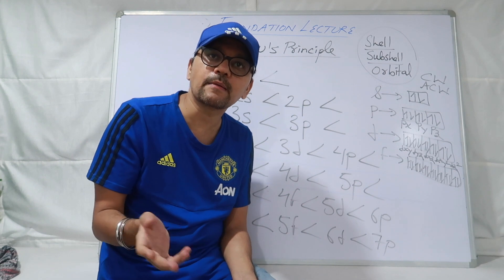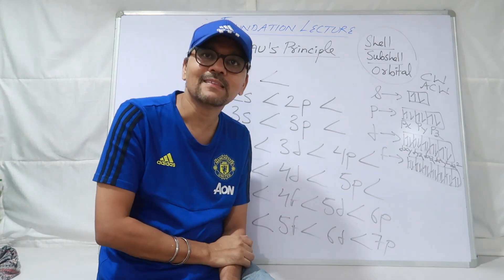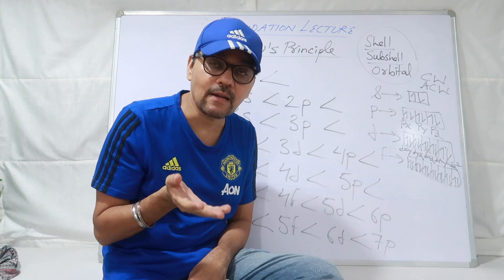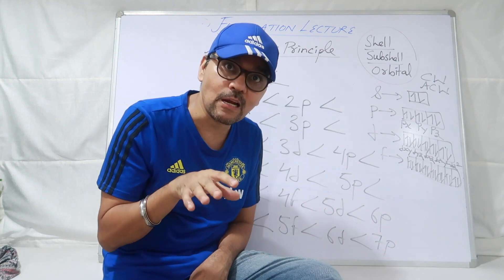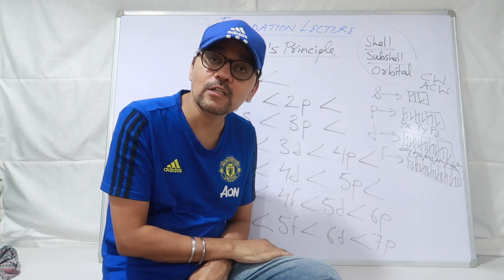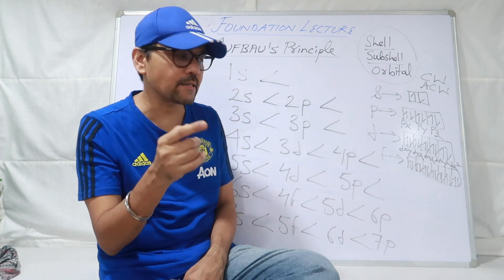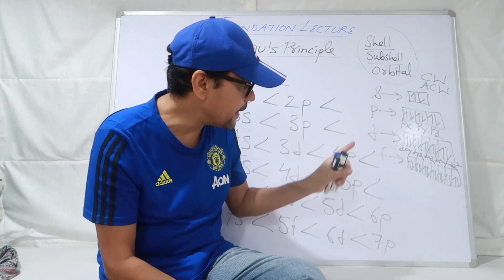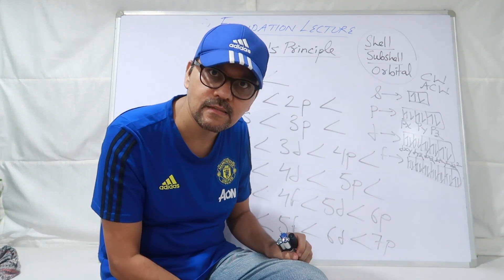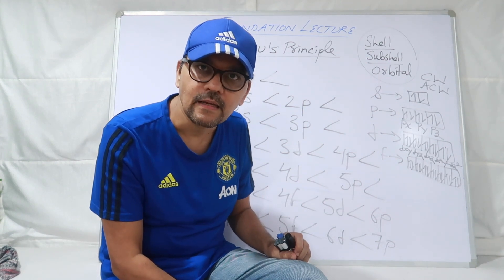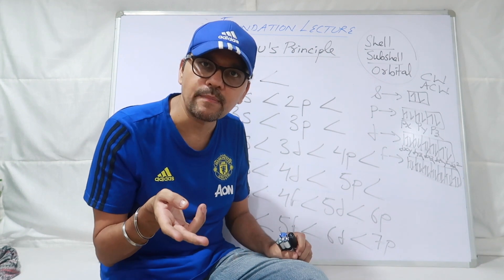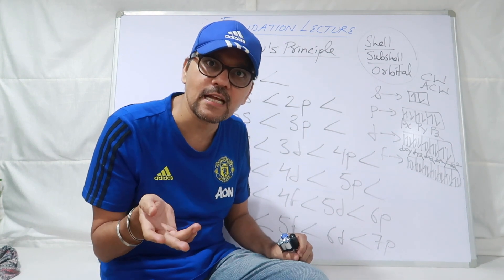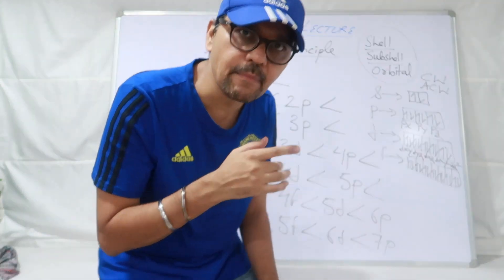Without electrons to you cannot write. Jab main calcium bolta hoon to kya likhte hain? 2,8,8,2. Same thing over here — agar aapko electrons likhne hain to aap kisme fill up karne wale ho? 11th mein aa rahe ho bhai — shell mein nahi, sub-shell mein nahi, orbital mein. Because there the probability of finding an electron is maximum. To S mein 2, P mein 3 orbital hain to 6, D mein 5 orientations hain to 10. F mein 7 orientations hain to 14. Iska matlab: S mein 1 orientation hai to 2 electrons, P mein 3 to 6, D mein 5 to 10, F mein 7 to 14. Jahaan jahaan bhi S likha hai, woh sab jagah pe 2 kar do, because S can accommodate maximum 2 electrons.